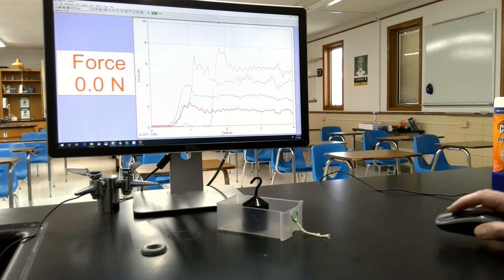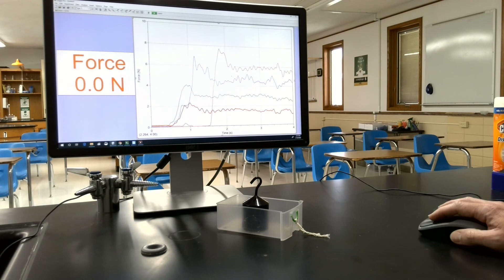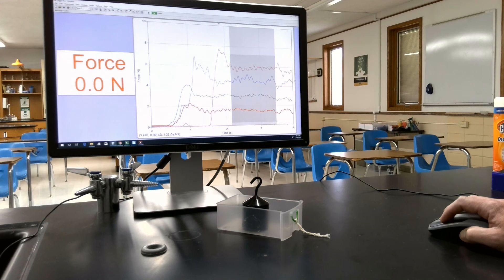If I wanted to look at the part that was the kinetic friction average, I could highlight that region and use the stat button.